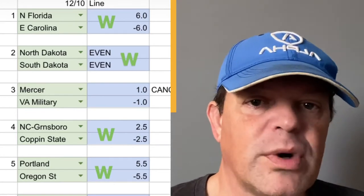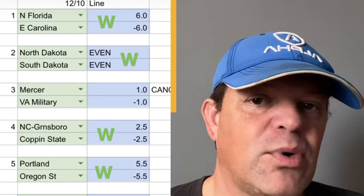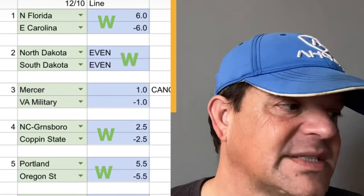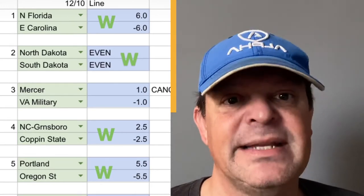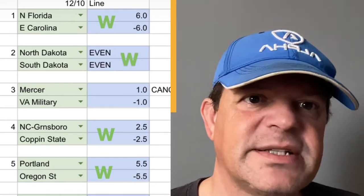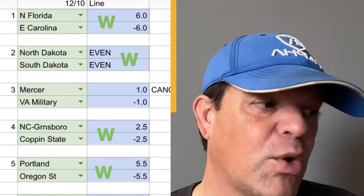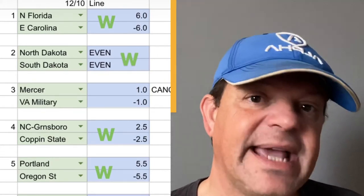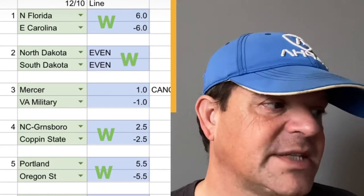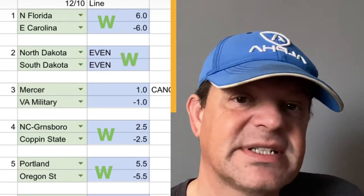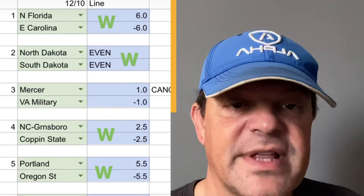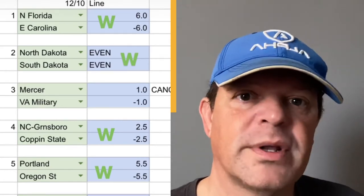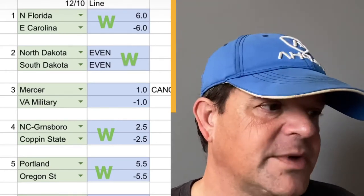Next one: Portland vs. Oregon State. We had Portland at plus 5.5; the actual line was Portland plus 16 — around 17 or 18 at one point. Portland actually won in overtime, 87 to 86. The line was 16, our line was five, giving us an 11-point differential in favor of Portland, and Portland covered.